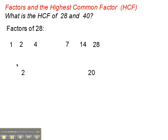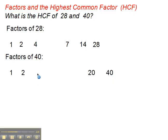Now, what about the factors of 40? 1 and 40, of course, are a factor pair. 2 and 20. 3 doesn't go. 4, yes, divides into 40 ten times — so 4 and 10. 5, yes — 5 and 8 make 40, so 5 and 8. 6, no. 7, no. And then we're back to 8 again. So we've got all the factors of 40.